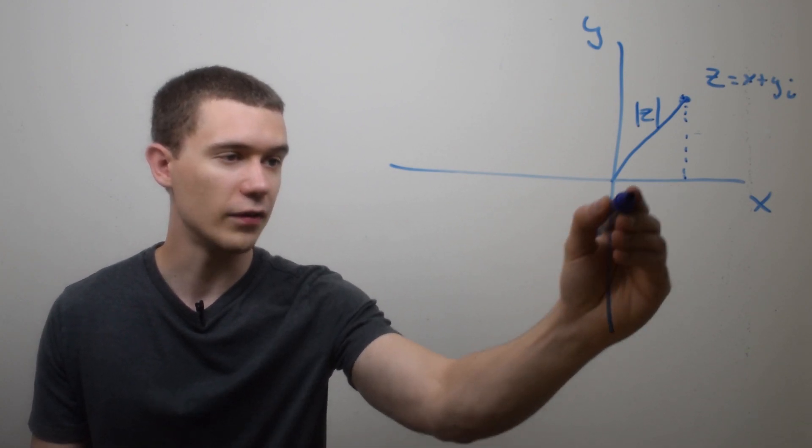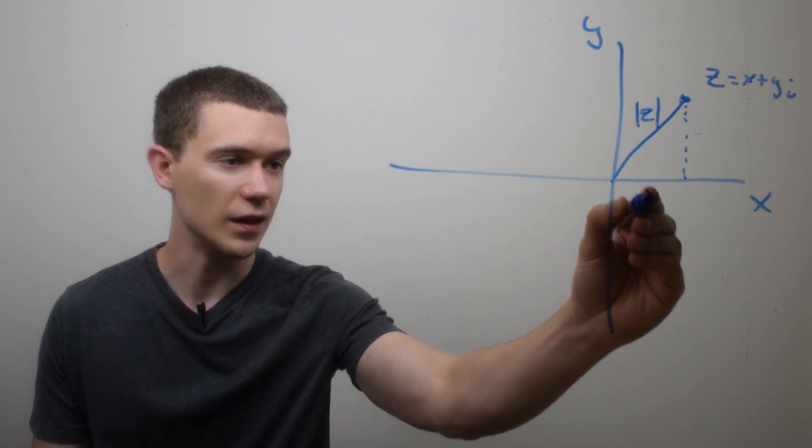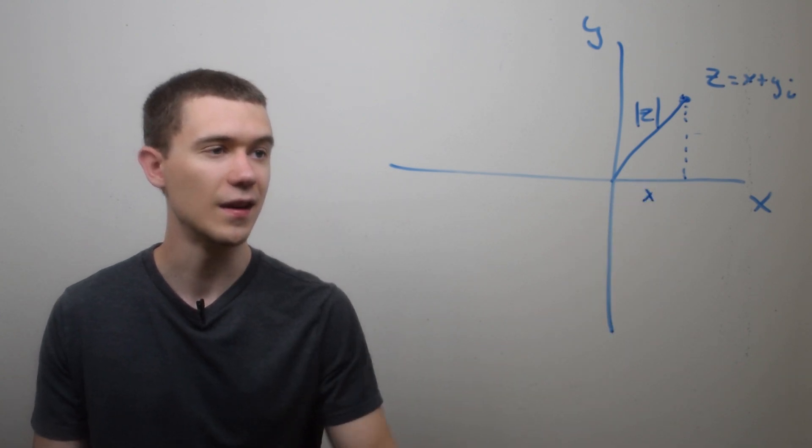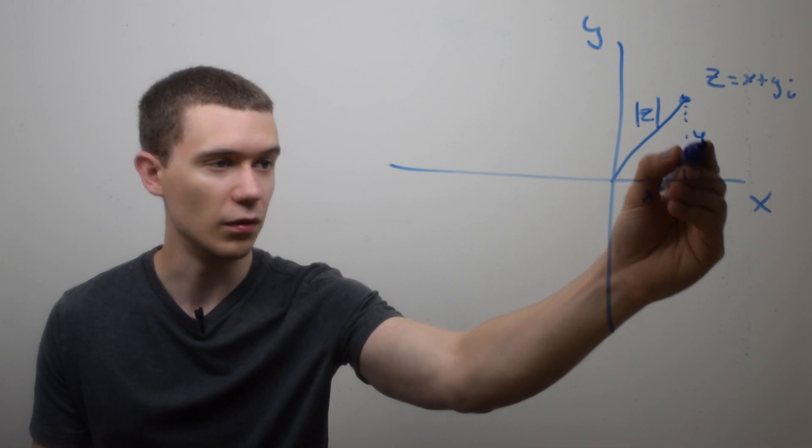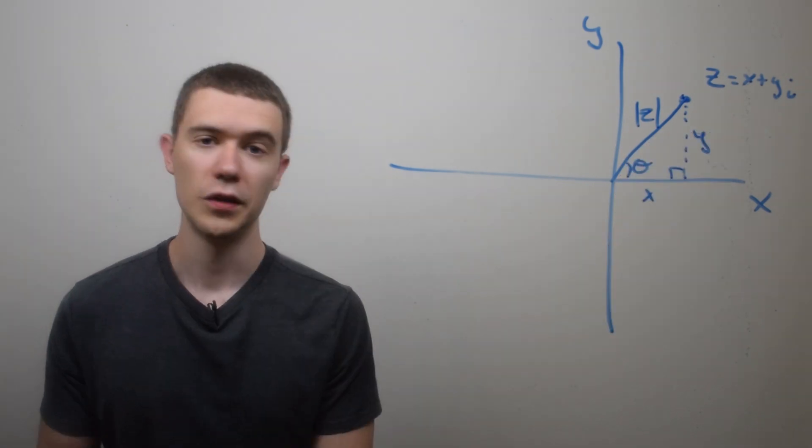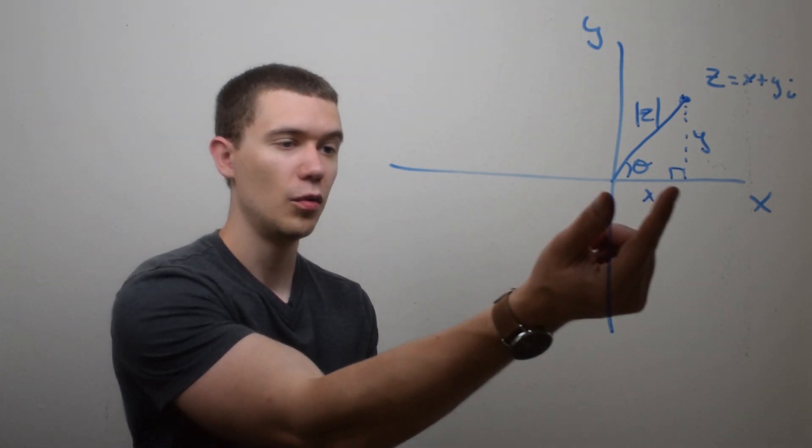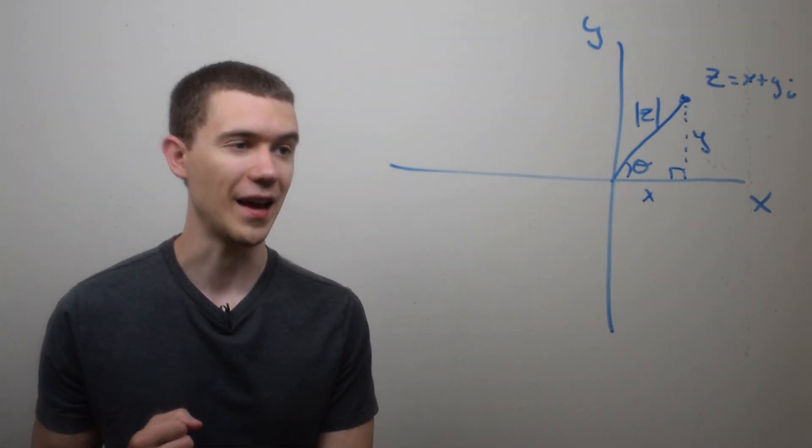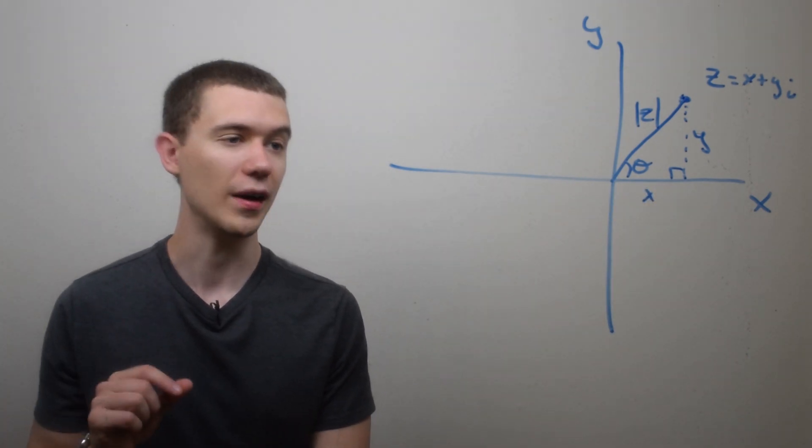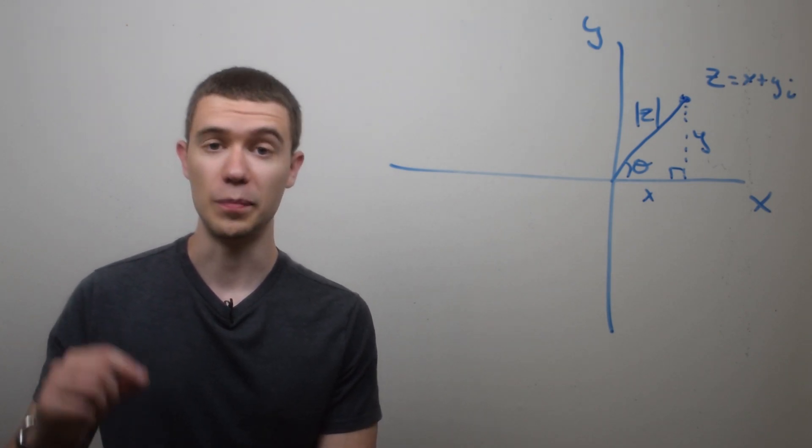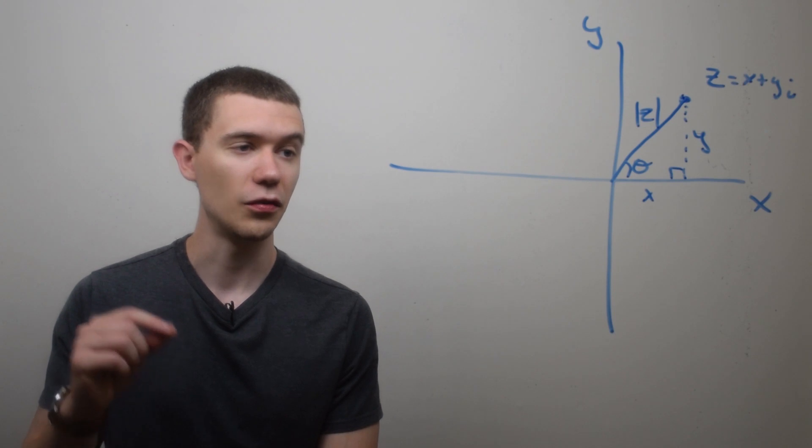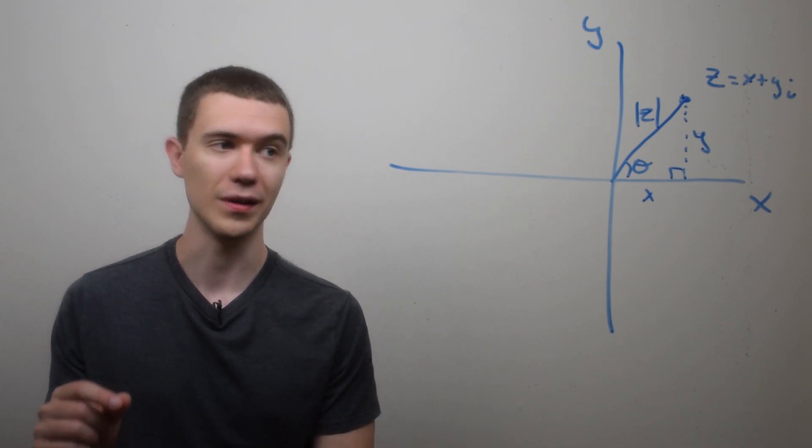And the vertical leg of the triangle will represent the y-distance. So if I label this triangle with the horizontal leg being x and the vertical leg being y, and this angle with the x-axis as theta, I can use basic trig identities to find out what the polar form of a complex number should be.